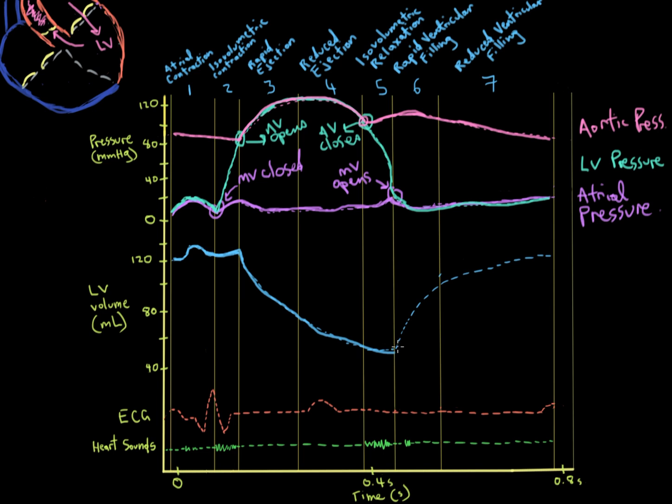That's the same idea we've been seeing with rapid ejection then reduced ejection, rapid filling then reduced filling. It has to do with the amount of fluid that's in there. Once we pump out all of this blood volume, we go into isovolumetric relaxation. At the end of isovolumetric relaxation, we go back into rapid ventricular filling, and this is why we're filling up so fast. Rapid ventricular filling and then reduced ventricular filling here, same principle as before.